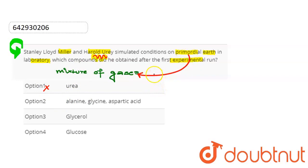Second option we have given here is alanine, glycine and aspartic acid. This is our option. It is right here. Because several amino acids were obtained.